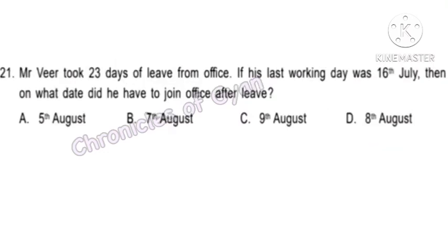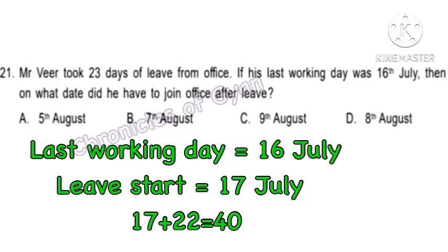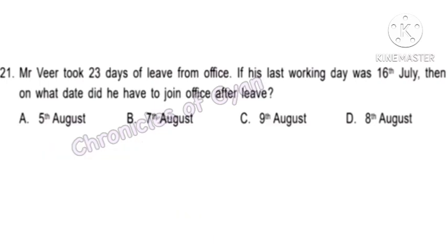Question 21. Mr. Veer took 23 days of leave from office. If his last working day was 16th July, on what day did he join back? Leave starts from 17th July. 17 plus 23 equals 40. Since July has 31 days, 40 minus 31 equals 9th August — he will resume office on 9th August.